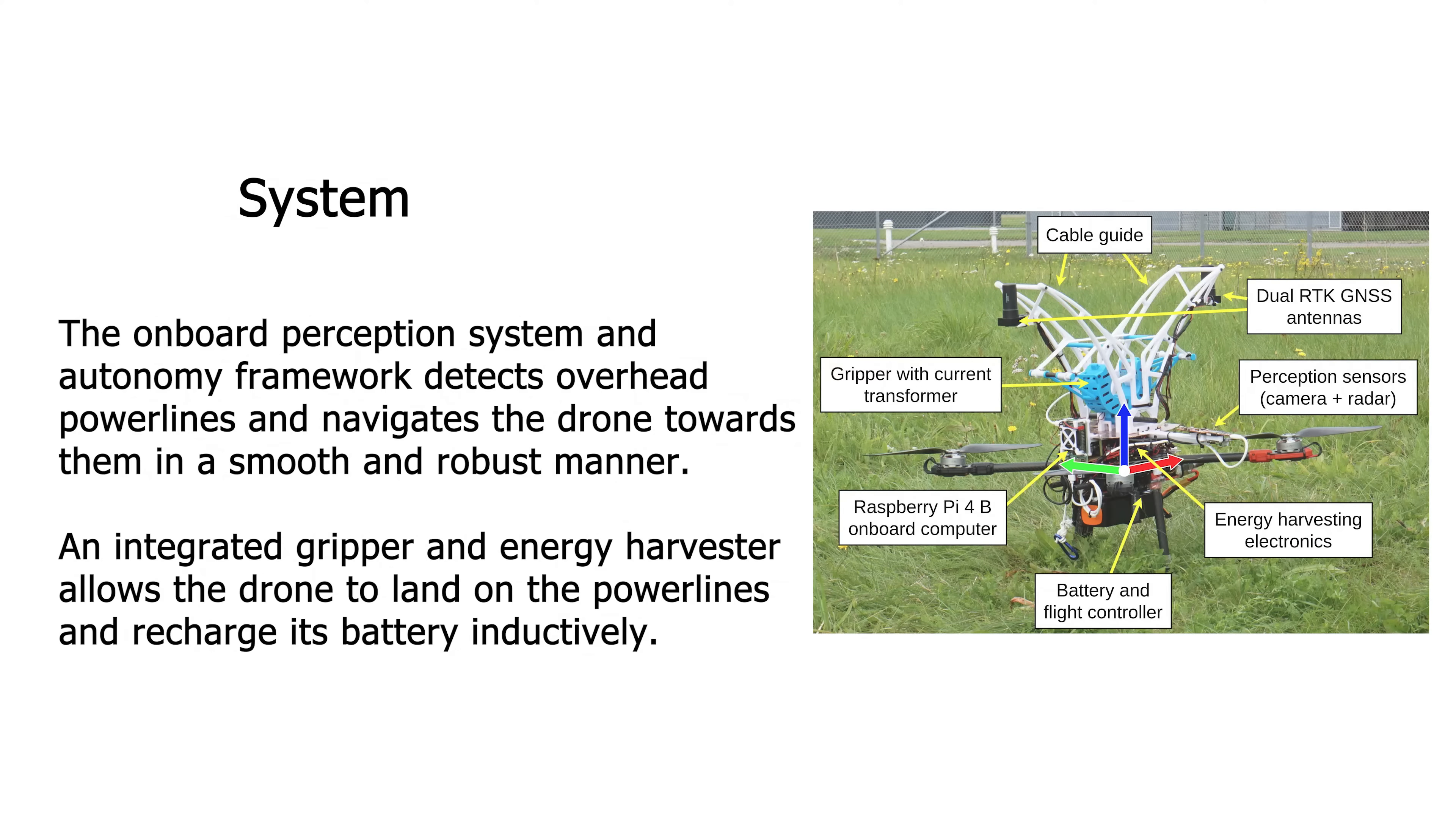The drone system is equipped with an onboard perception and autonomy component which detects overhead power lines and navigates the drone towards them. The gripper on top of the drone allows it to grasp a power line and recharge its batteries.